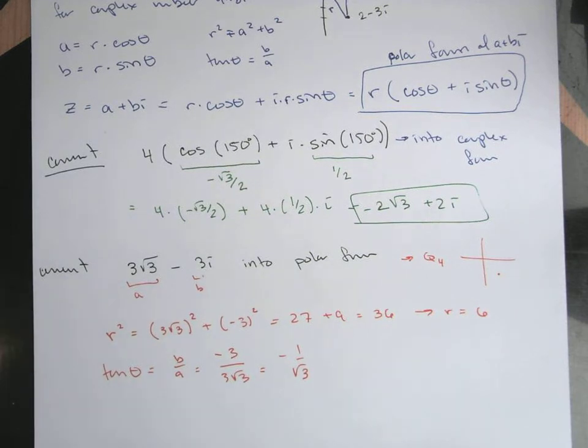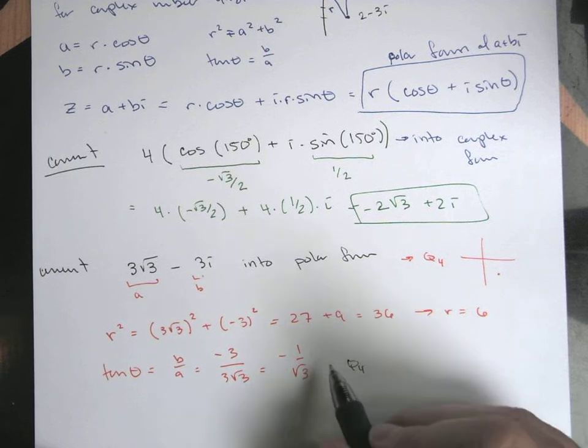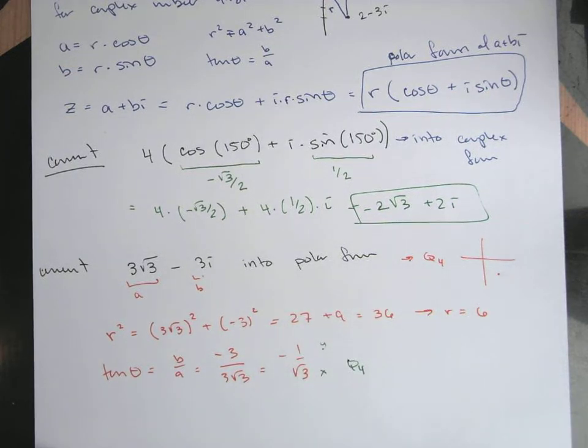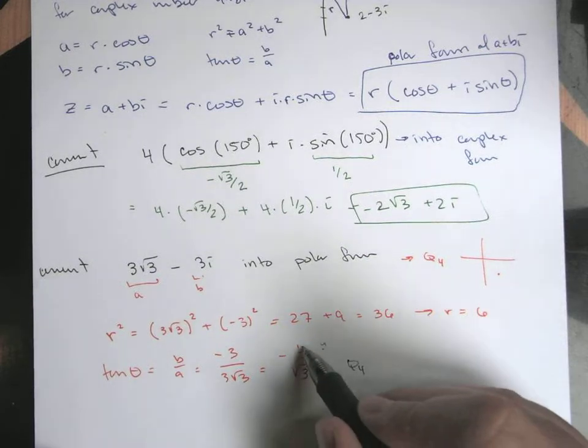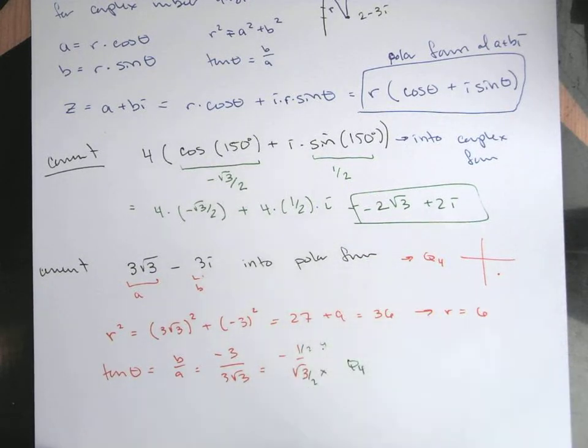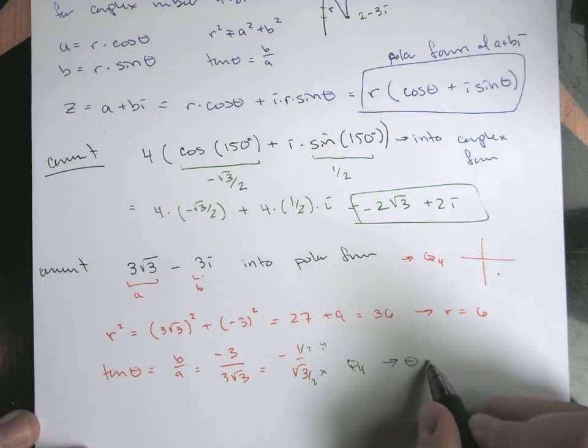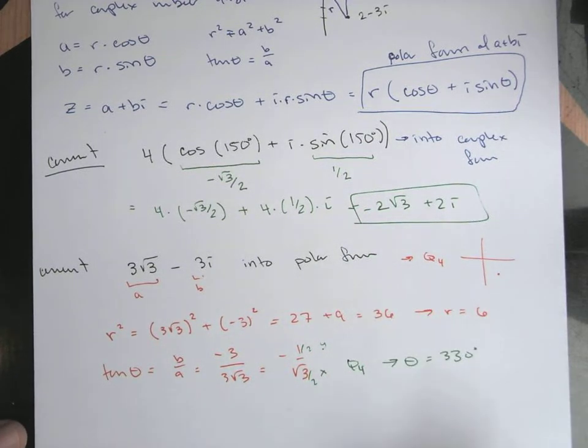So we want quad 4 where your kind of y value is 1, and your x value is root 3. This really would kind of be like 1 half and root 3 over 2. So what's the position where that happens? Well, that would be sort of the 30 degree angle in quadrant 4. That would be like 330 or 11 pi over 6. I'll just do our degrees here, because why not?